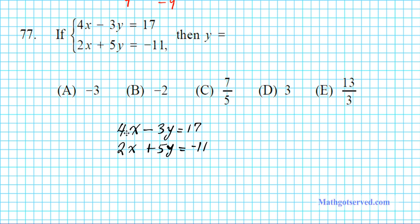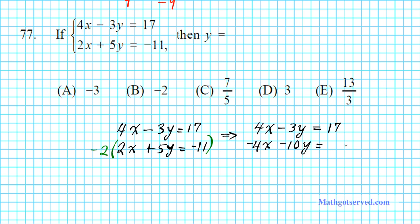How do we eliminate x? Looking at the two coefficients of x — 4 and 2 — we want to find the LCM. The LCM of 4 and 2 is 4. Since the first equation already has 4, we need to make the second equation's x-coefficient negative 4, which is the opposite of positive 4. To do that, we multiply the entire second equation by negative 2. The first equation stays the same: 4x minus 3y equals 17. The second equation becomes negative 4x minus 10y equals positive 22.